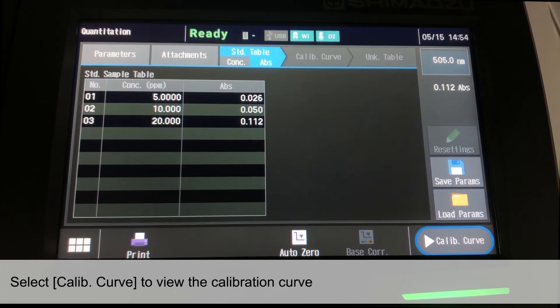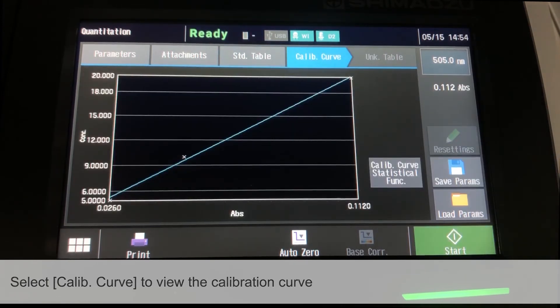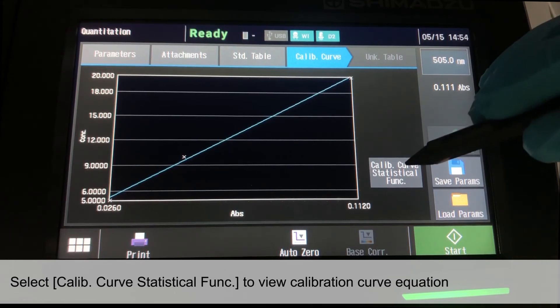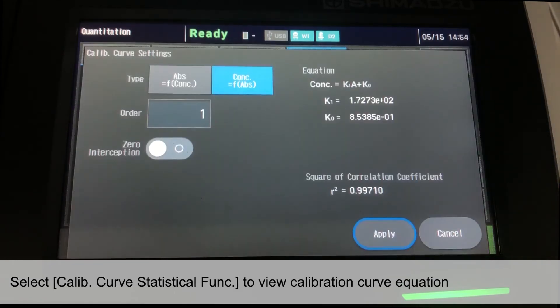After the Standard Sample measurement is completed, select Calibration Curve to view the curve. Select Calibration Curve Statistical Function to view Calibration Curve Equation.